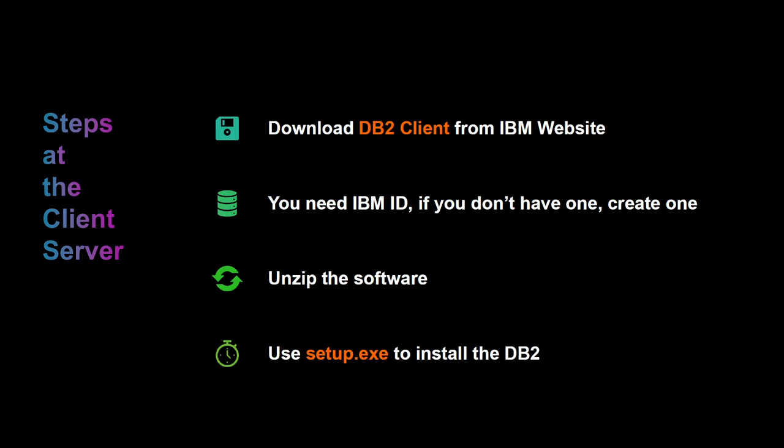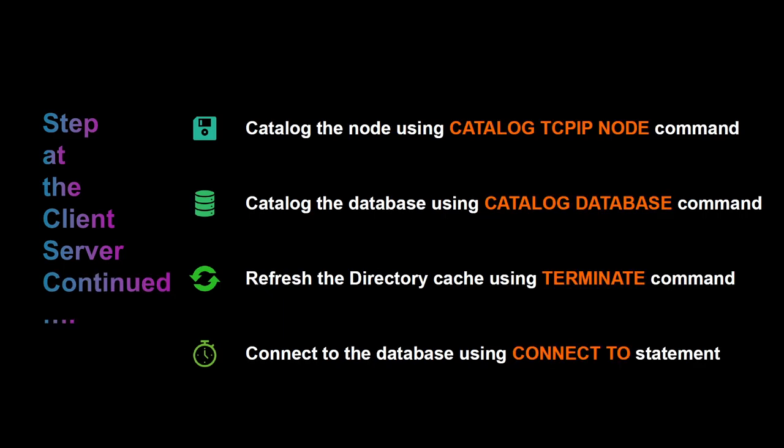Once the client is installed, we are ready to connect to our database instance. First, use the catalog TCP/IP node command to catalog the node. Then catalog the database using the catalog database command. Then refresh the directory cache using the terminate command. If all is successful and there are no errors, you should be able to connect to the database using the connect to statement.